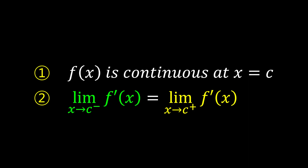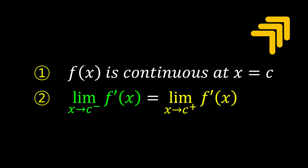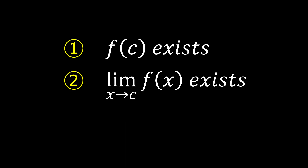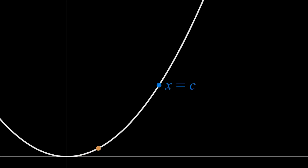For function f to be continuous at point c, three conditions must be satisfied. First, f must exist. Second, as x approaches c, the limit of f must exist. Third, the values obtained from the first and second conditions must be equal. To put it simply, if you can draw a line without lifting the pen and without any gaps from the left to the right of the c value, then f of x is continuous at c.